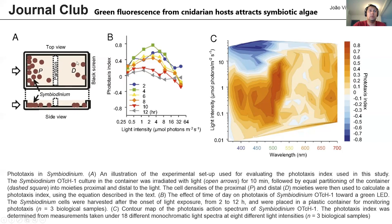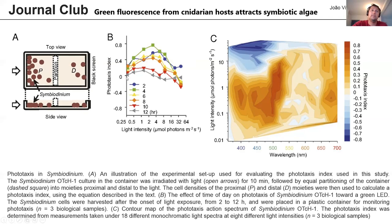They used these two cell numbers to generate a phototaxis index, which is basically the number of cells on the light side minus the number of cells on the dark side divided by the total number of cells. So a positive value means more cells toward the light, and a negative value means more cells away from the light. They did these experiments for several wavelengths across the visible spectrum.